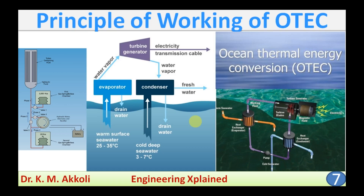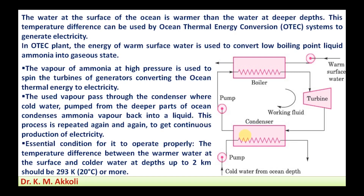I am going to discuss the working of this ocean thermal energy conversion using this flow diagram. In the OTEC plant, warm surface water is used to boil low boiling point liquid ammonia. Vapor is generated in the boiler by transferring heat from the warm surface water to the ammonia.